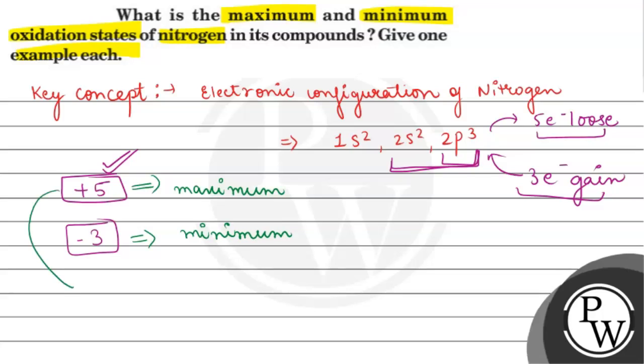If we look at +5, then take HNO₃. If we calculate the oxidation state of nitrogen, then hydrogen is +1, oxygen is -2, and the total equals zero. So the oxidation state of nitrogen is +5.